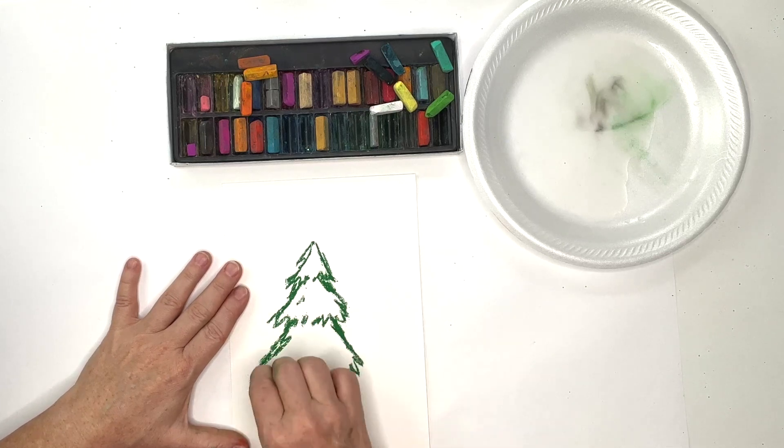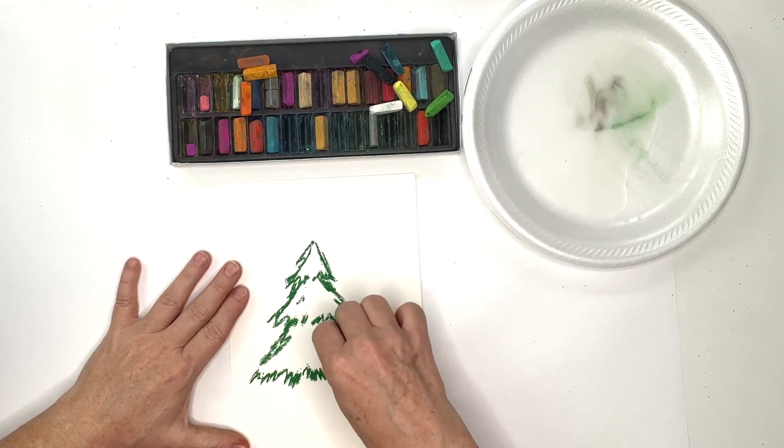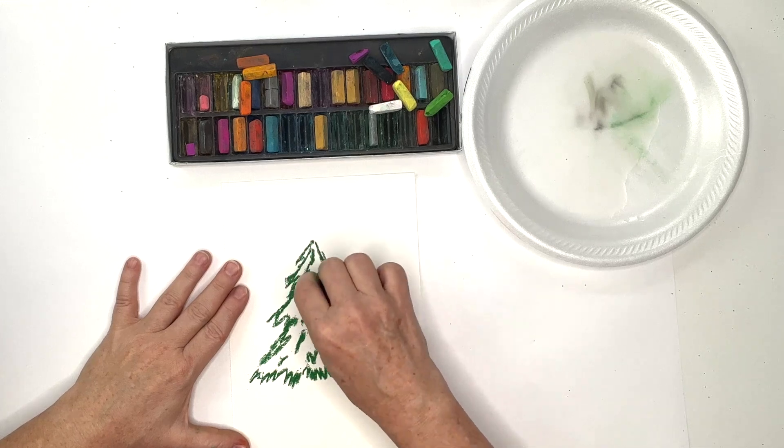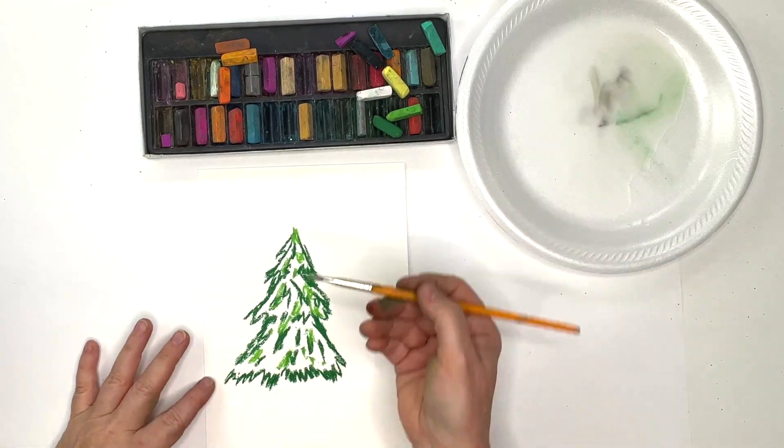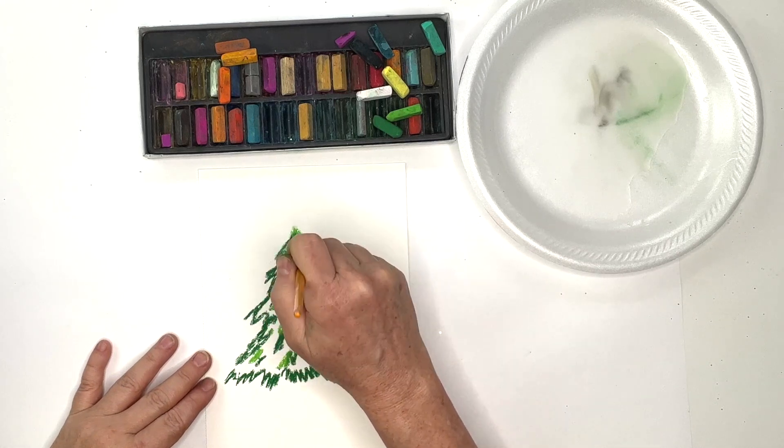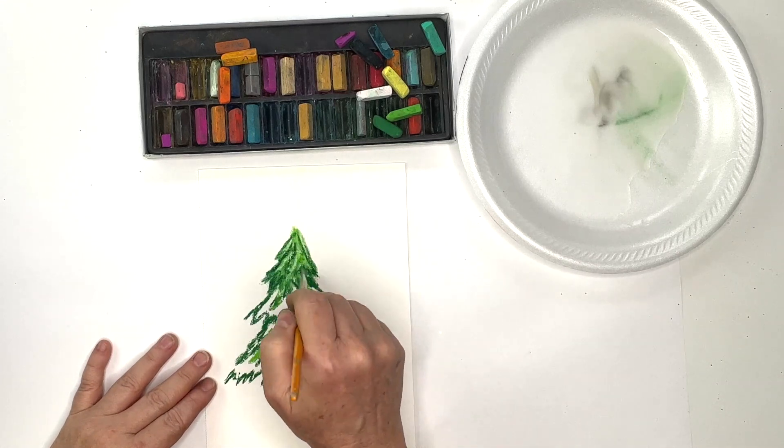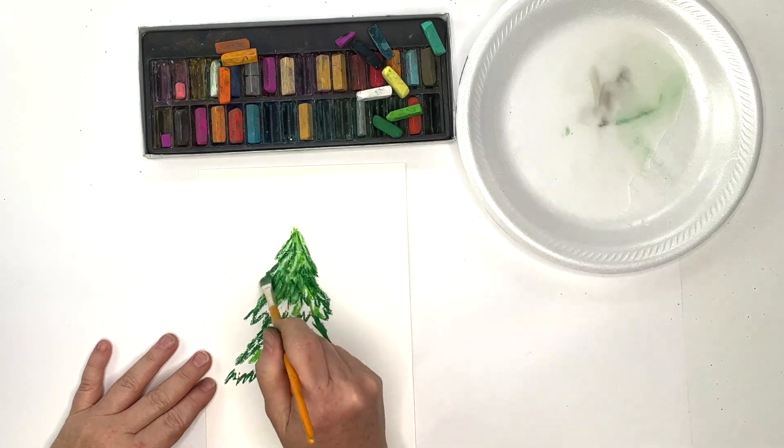Now rather than blending with my fingers, because you can blend chalk with your fingers, instead I'm going to blend that chalk pastel with a paintbrush dipped in the liquid fabric starch. And it's going to move the chalk around just like watercolor.